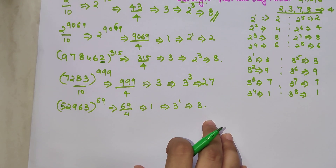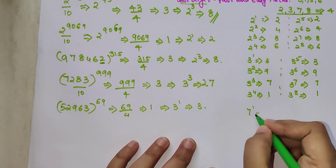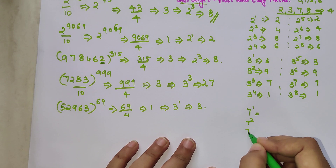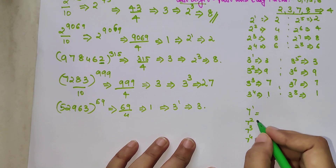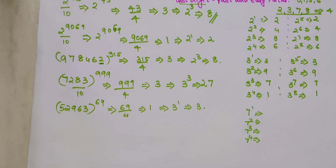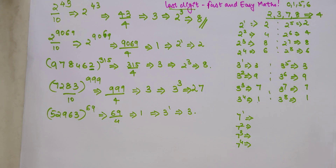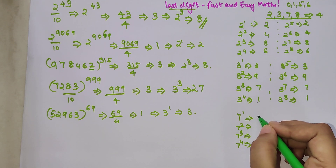Similarly, the power cycle for 7 is also 4. If you like the way I'm explaining, please hit the like button — it gives me encouragement to make these videos and also helps the YouTube algorithm show these tips and tricks videos to others around the globe.